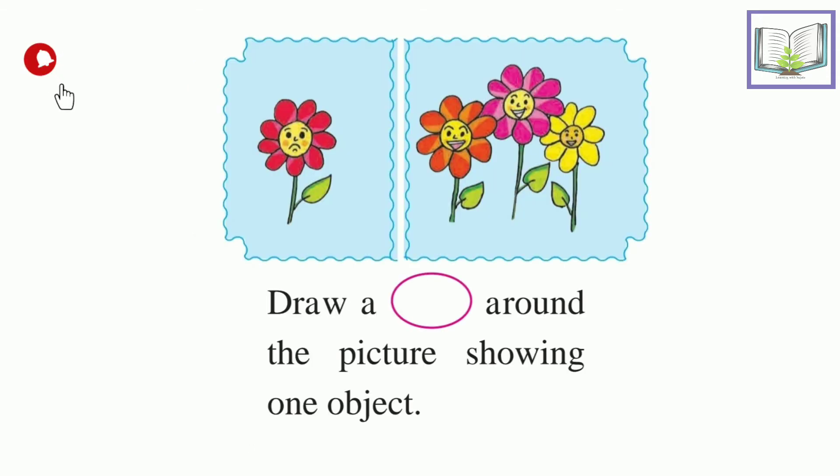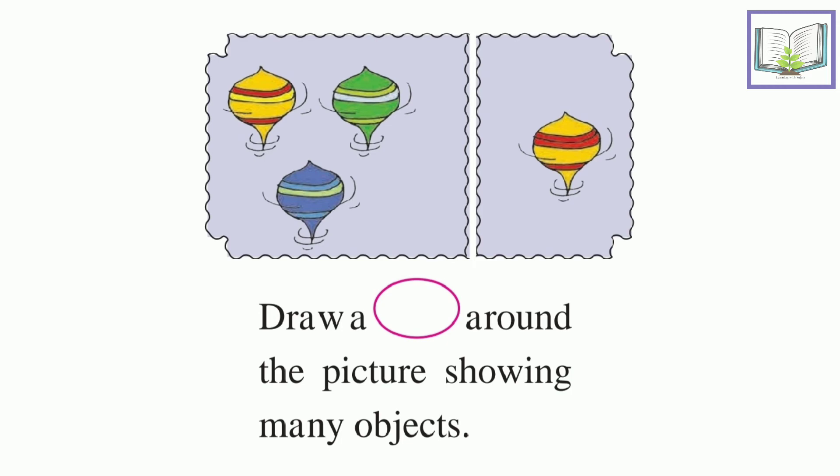Here, draw the circle around the picture showing one object. So now my kids know what is one and what is many. So which picture shows one object? That's good. Let's see another example. Now draw the circle around the picture showing many objects.